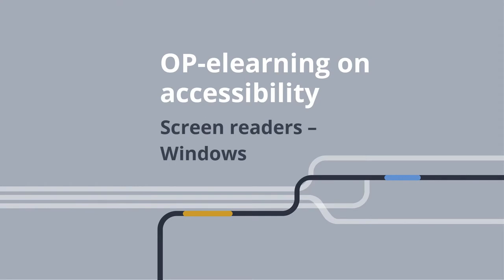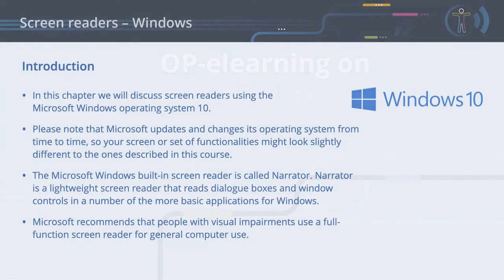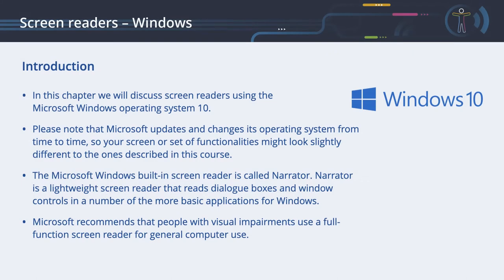Screen Readers. In this chapter, we will discuss screen readers using the Microsoft Windows Operating System version 10. Please note that Microsoft updates and changes its operating system from time to time, so your screen or set of functionalities might look slightly different to the ones described in this course. The Microsoft Windows built-in screen reader is called Narrator. Narrator is a lightweight screen reader that reads dialog boxes and window controls in a number of the more basic applications for Windows. Microsoft recommends that people with visual impairments use a full-function screen reader for general computer use.